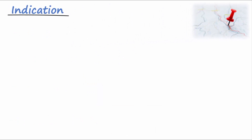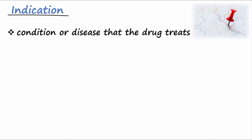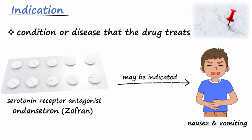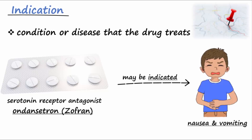The indication for a drug is the condition or disease the drug treats. For example, the serotonin receptor antagonist ondansetron may be indicated for someone experiencing nausea and vomiting. So we would say an indication for ondansetron is nausea and vomiting.